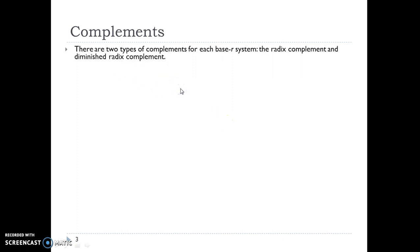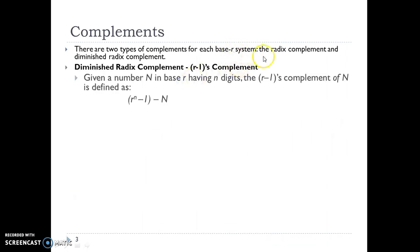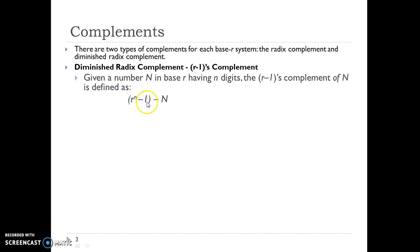So first let's see what complements are. In Digital Logic, complements are basically of two types: radix complement and diminished radix complement. So if we have a base R system, then the R-1 complement is known as the diminished radix complement. Given a number N in base R having n digits, the R-1's complement of N is defined as R to the n minus 1, minus the number N.